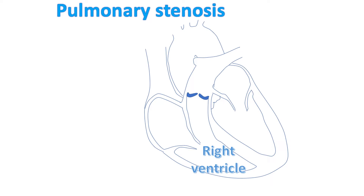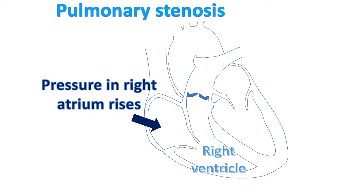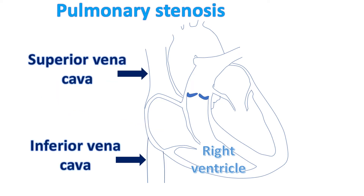When the right ventricle fails, the back pressure is transmitted to the right atrium, the right upper chamber of the heart. The right atrium enlarges due to the higher pressure inside. This is in turn transmitted to the great veins known as the superior and inferior vena cava. The superior vena cava drains blood from the head and neck to the right atrium to be taken to the lungs for oxygen enrichment. The inferior vena cava drains blood from the lower part of the body for transport to the lungs.